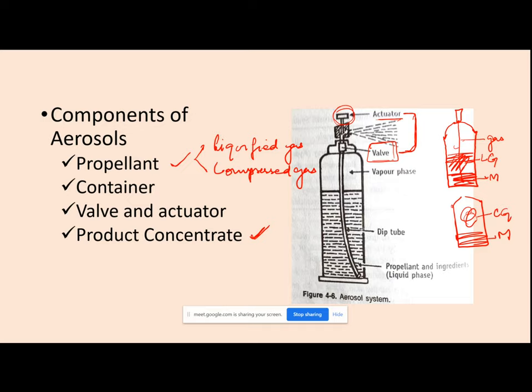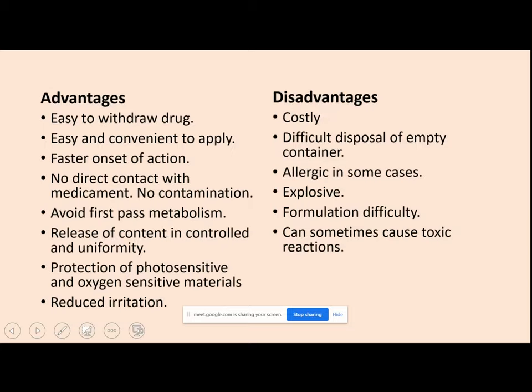These are the components present in your aerosols. The next important things that make aerosols effective are the container and the valve and actuator assembly. With this assembly you can add your medicament and propellant under pressure into the aerosol system. So the components of aerosol are: propellant (liquefied gas or compressed gas), container, valve and actuator assembly, and product concentrate.